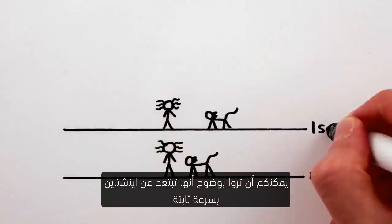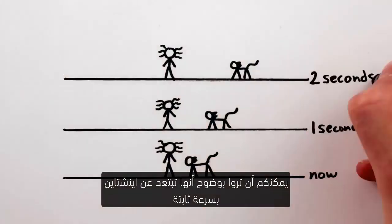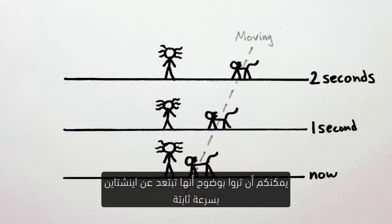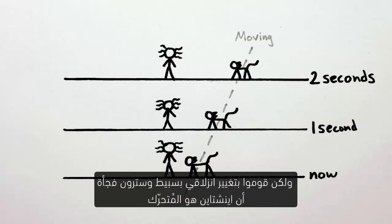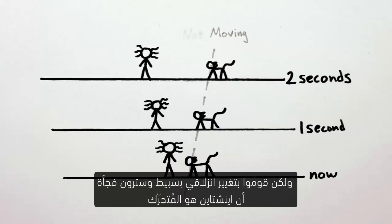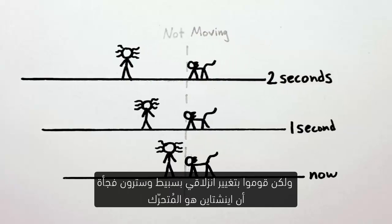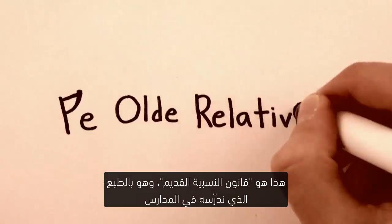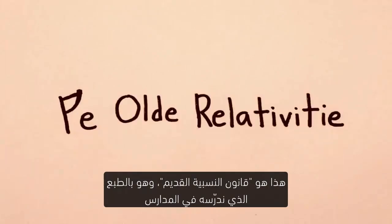You can clearly see that the cat is moving away from Einstein at a constant velocity. But do a little sliding switcheroo, and suddenly it looks like Einstein's the one moving. This is the old-fashioned principle of relativity.